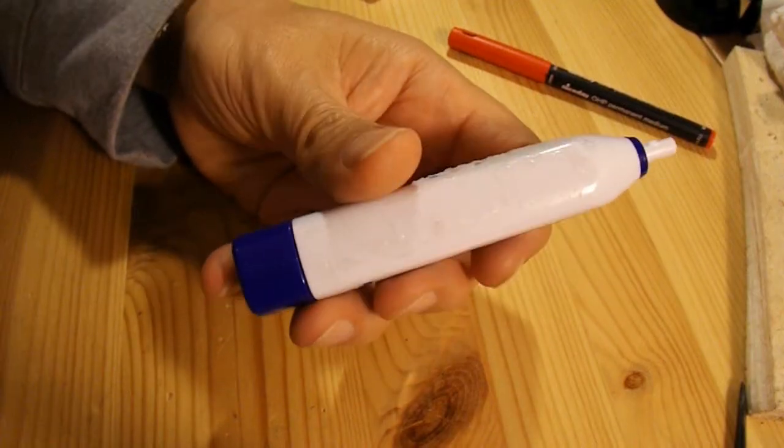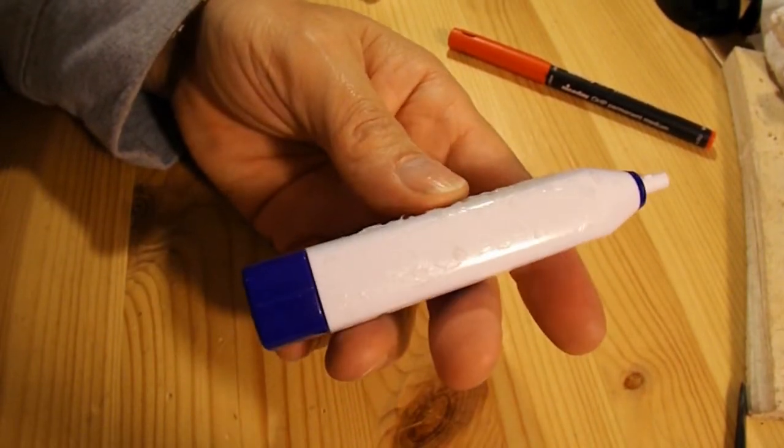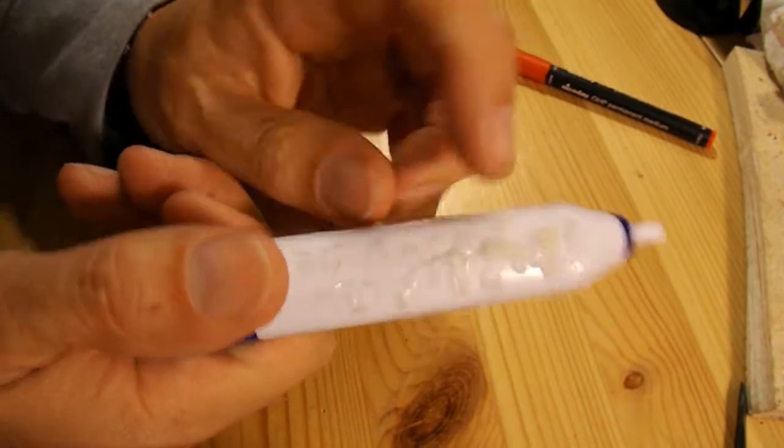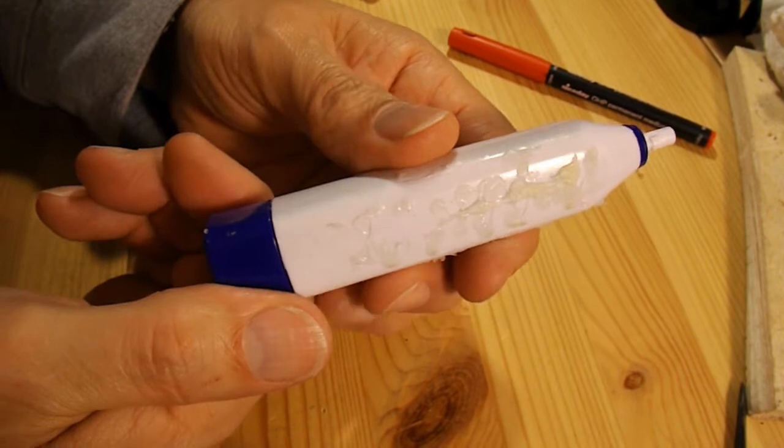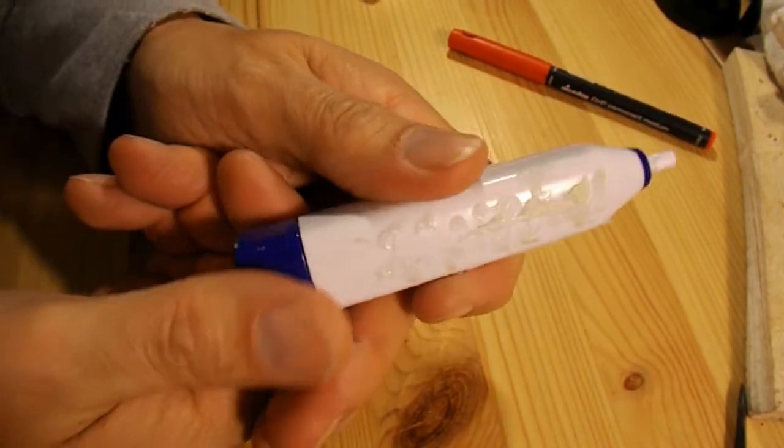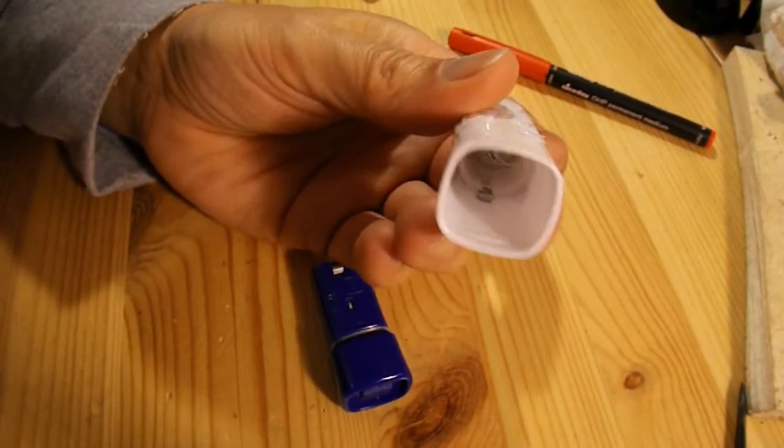And while we're at it this is the vibrating toothbrush I'm going to use. As you can see it's got hot glue on it from where it was in a toy car, or a bristle bug or something like that.